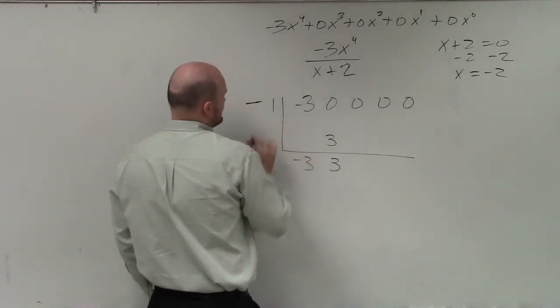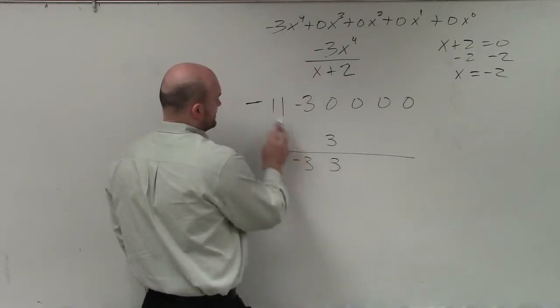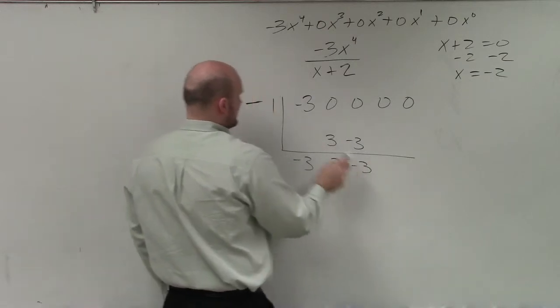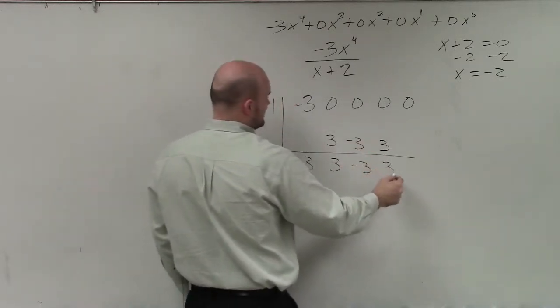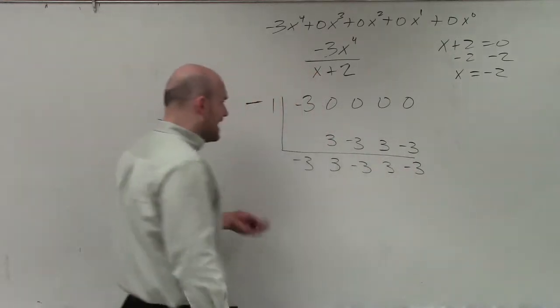3 times -3 is going to be 3 times -3. 3 times -3 is -3. 0 plus -3 is -3. -3 times -2 is going to be positive 6. 0 plus 3 is 3. 3 times -2 is a -6.